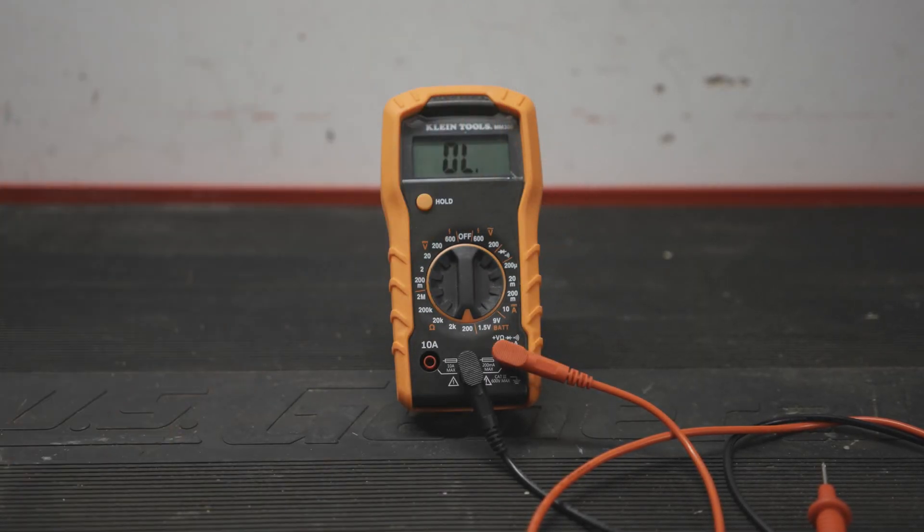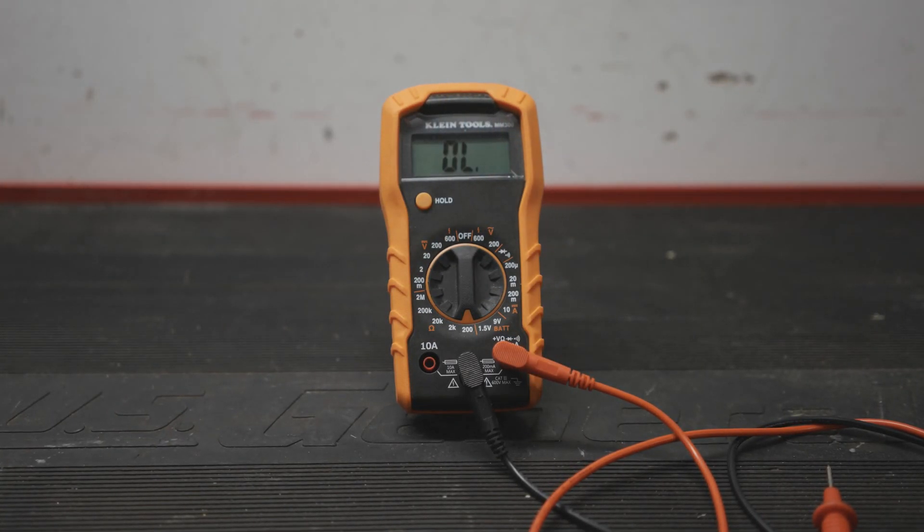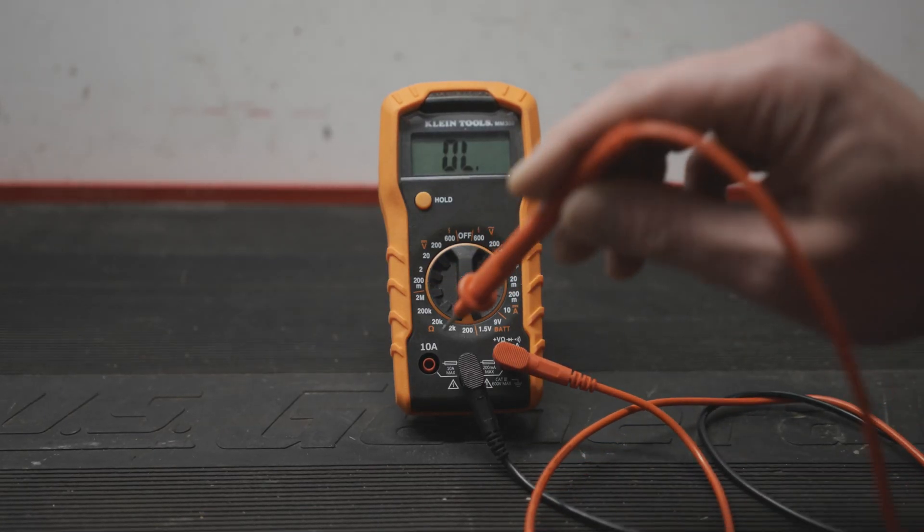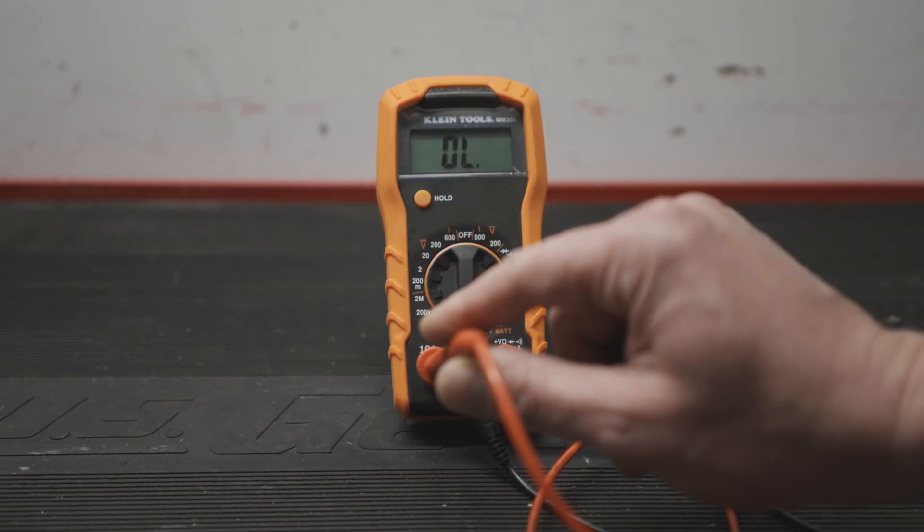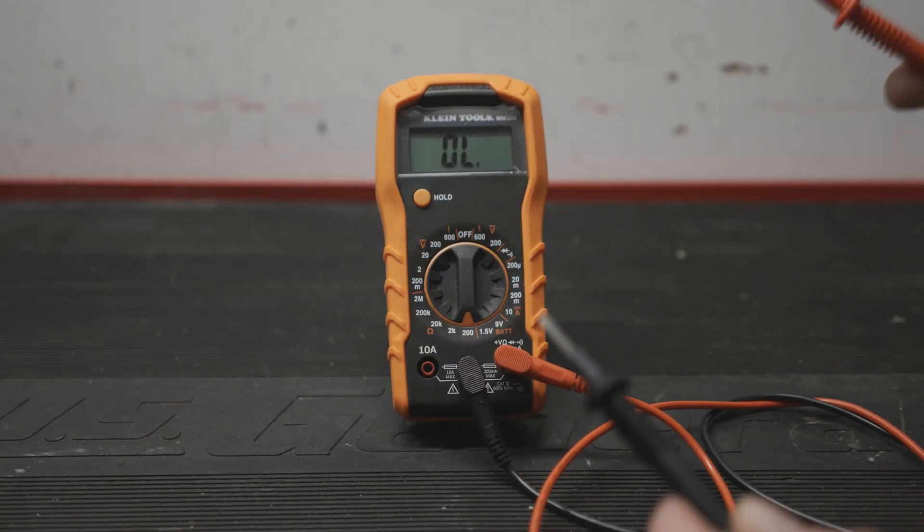Select the lowest ohm setting you have and as you can see my multimeter is displaying OL for overload. This is correct when the leads aren't connected to anything. If you take the red lead and touch it to the amp port you should have some type of resistance. If it's still displaying OL you probably have a blown fuse.